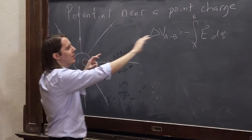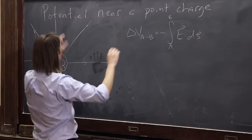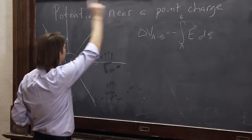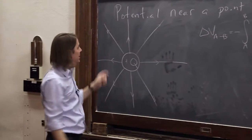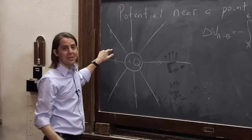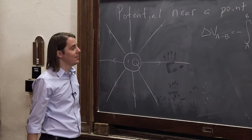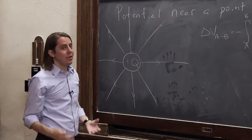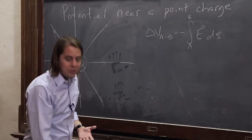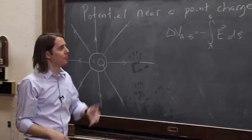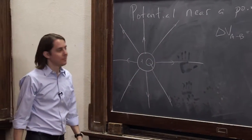Now, it could be anywhere — from any a to any b. It could even be the same point, and you get no potential difference. So now, to really get the potential near a point charge, we have to actually plug in the formula for E and figure out what's going on.